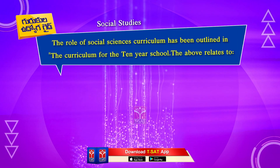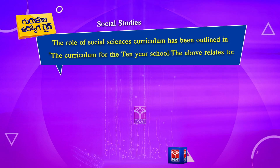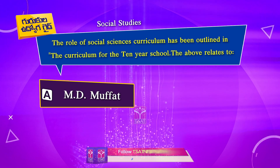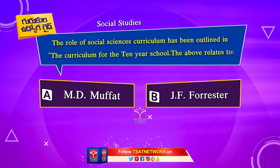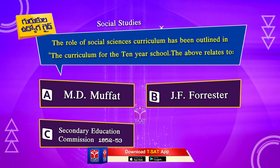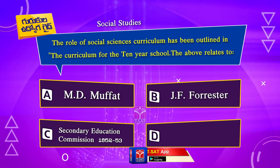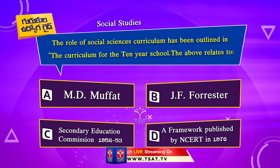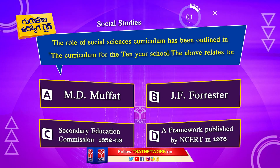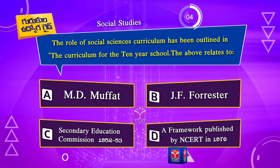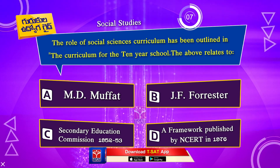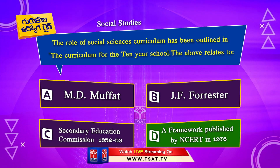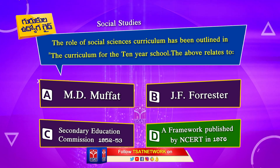The role of Social Sciences curriculum has been outlined in the curriculum for the 10-year school. The above relates to: Option A. M.D. Mufat. Option B. J.F. Forrester. Option C. Secondary Education Commission 1952-53. Option D. A framework published by NCRT in 1976. The correct answer is Option D. A framework published by NCRT in 1976.